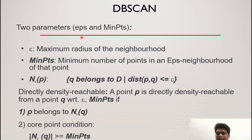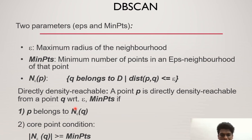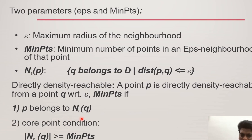Two parameters to be considered are: first, the maximum radius of the neighborhood — because based on the radius only we define this algorithm — and second, the minimum points, which are the minimum number of points located in the neighborhood of that radius region. So we have the neighborhood of P, where the distance among the points should be less than or equal to the maximum radius of the neighborhood. In the case of directly density reachable, point P is reachable from point Q with respect to both epsilon and the minimum points. The condition is that point P should belong to that particular neighborhood, and the core point condition is that the neighborhood size should be greater than the total minimum points defined earlier.